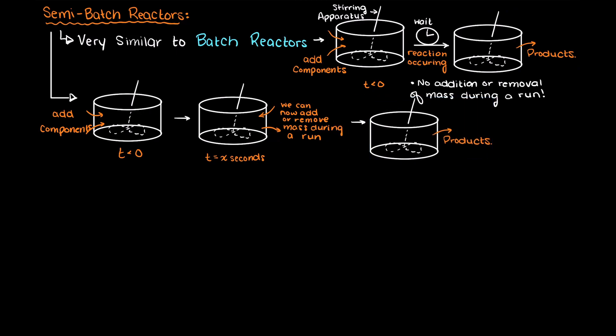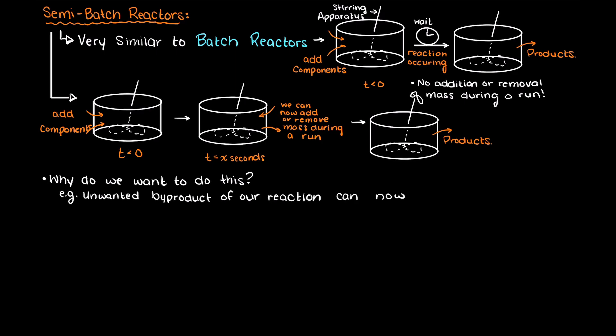But you may ask yourself, why would we want to do this? Why couldn't we just add all our components at the beginning like we did for a batch reactor? Although these types of reactors are not as common as some of the other types we will see throughout this course, they are great if, for example, we have an unwanted byproduct of our reaction, and we can siphon off that component as our reaction proceeds.